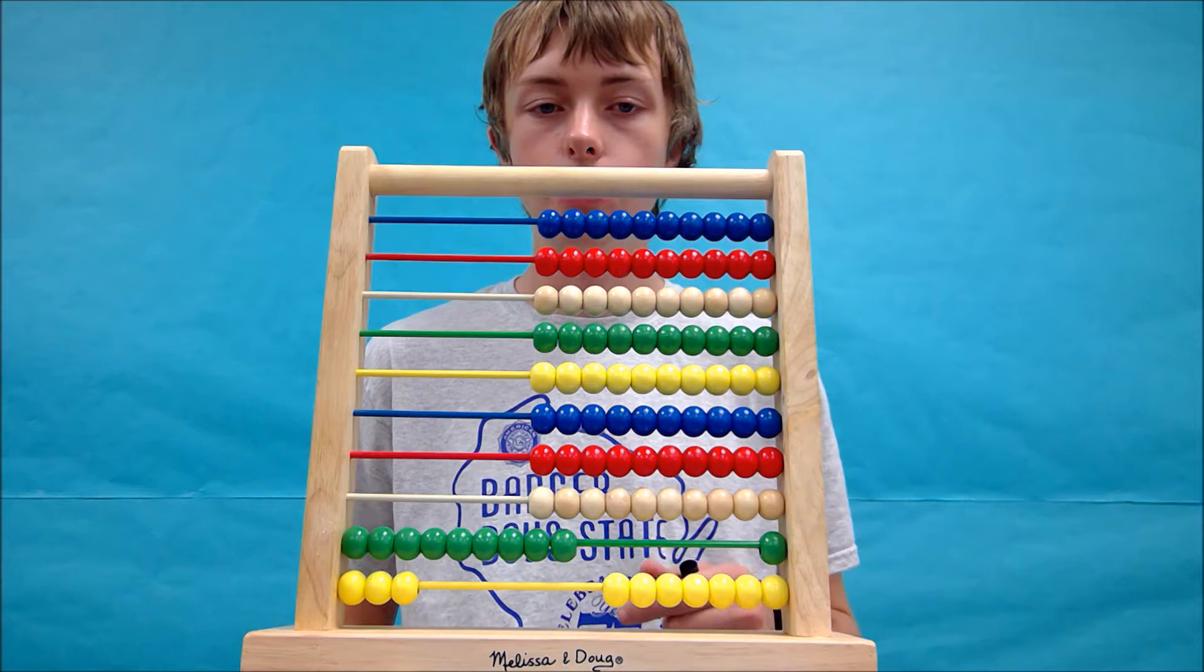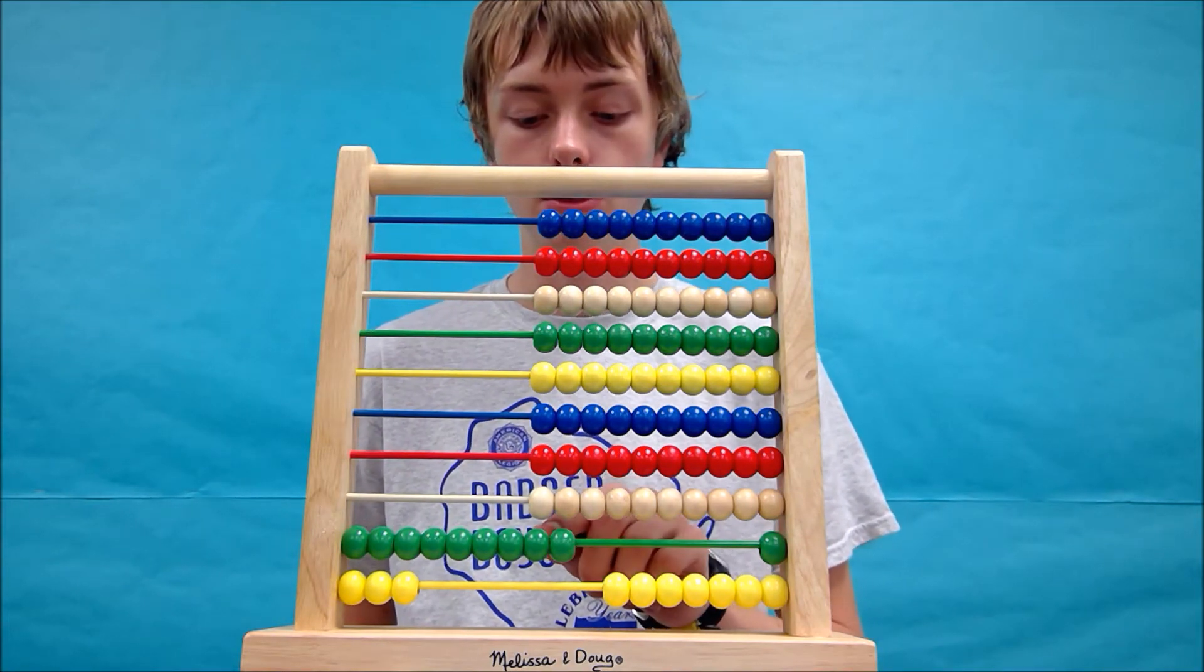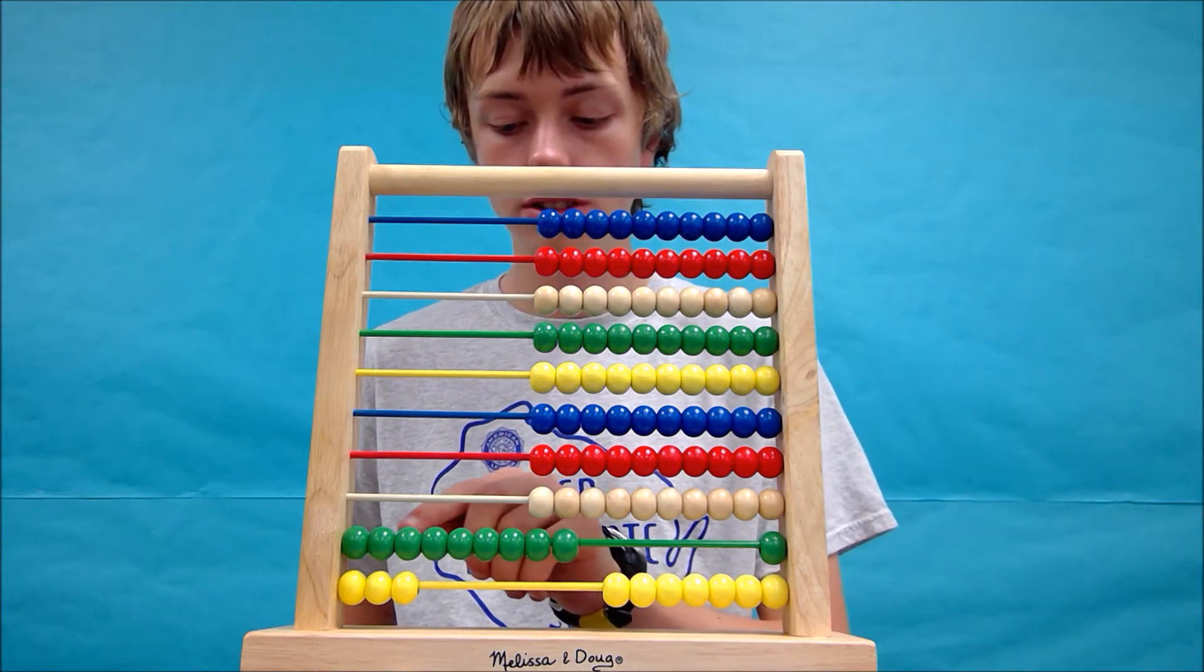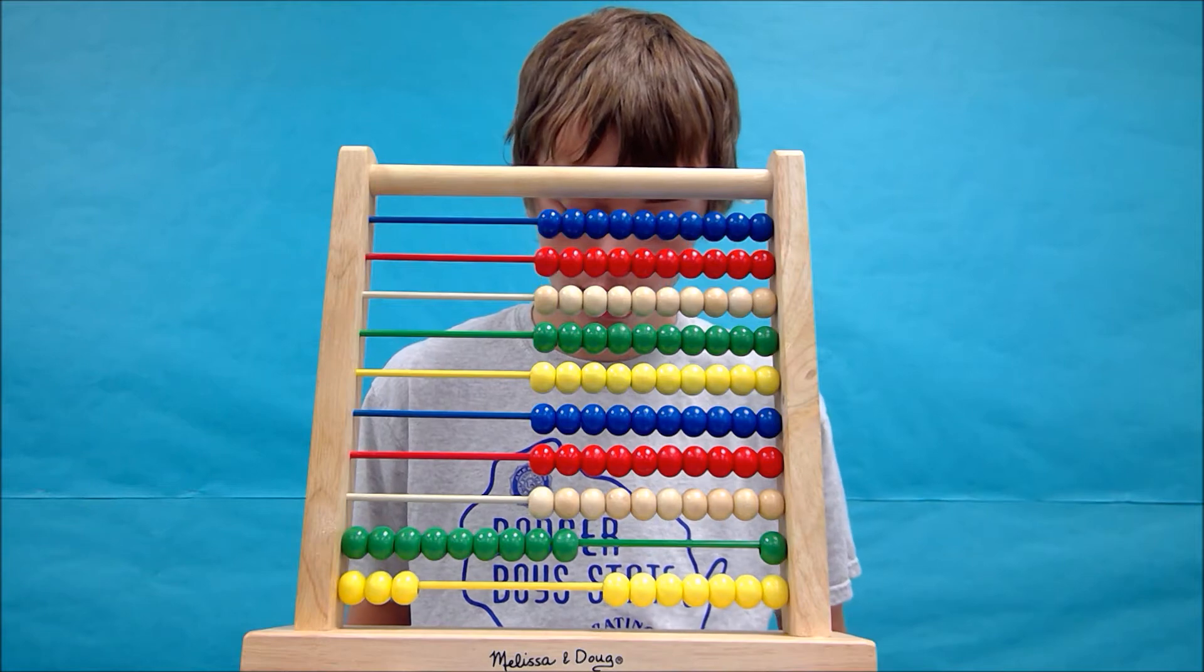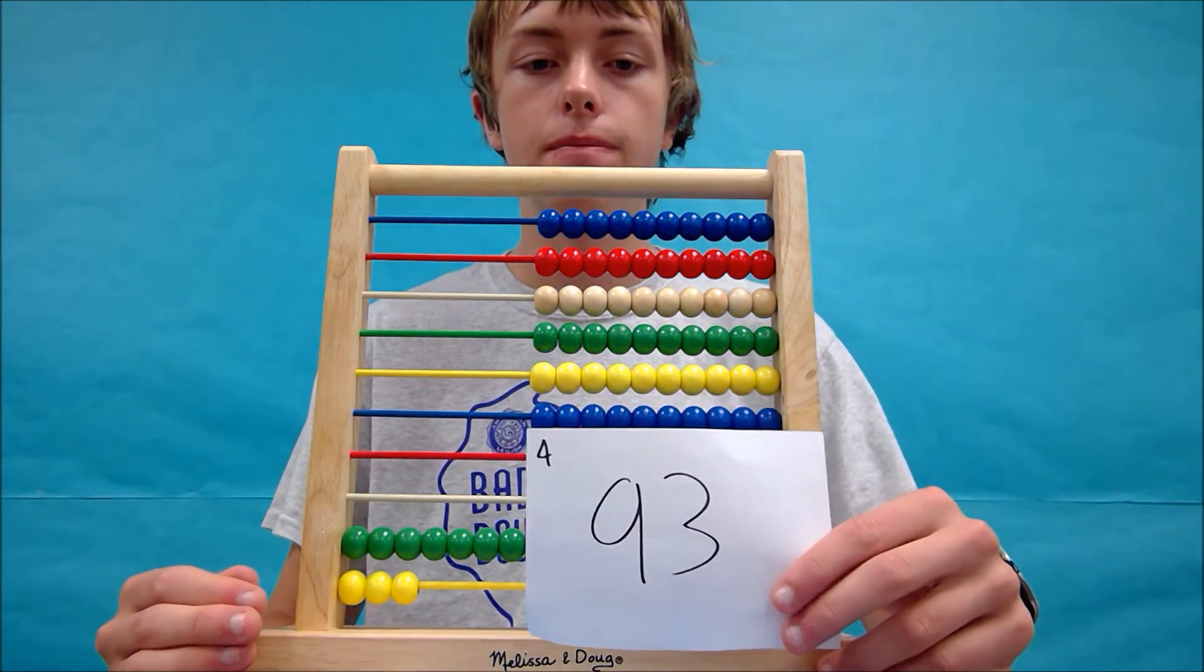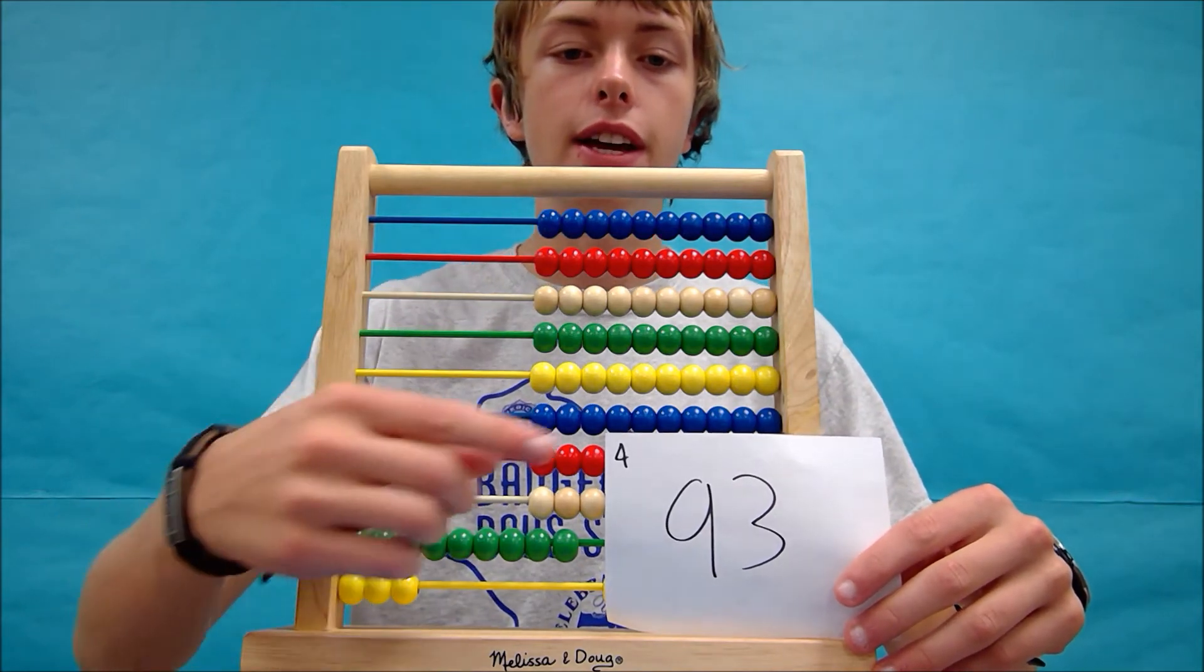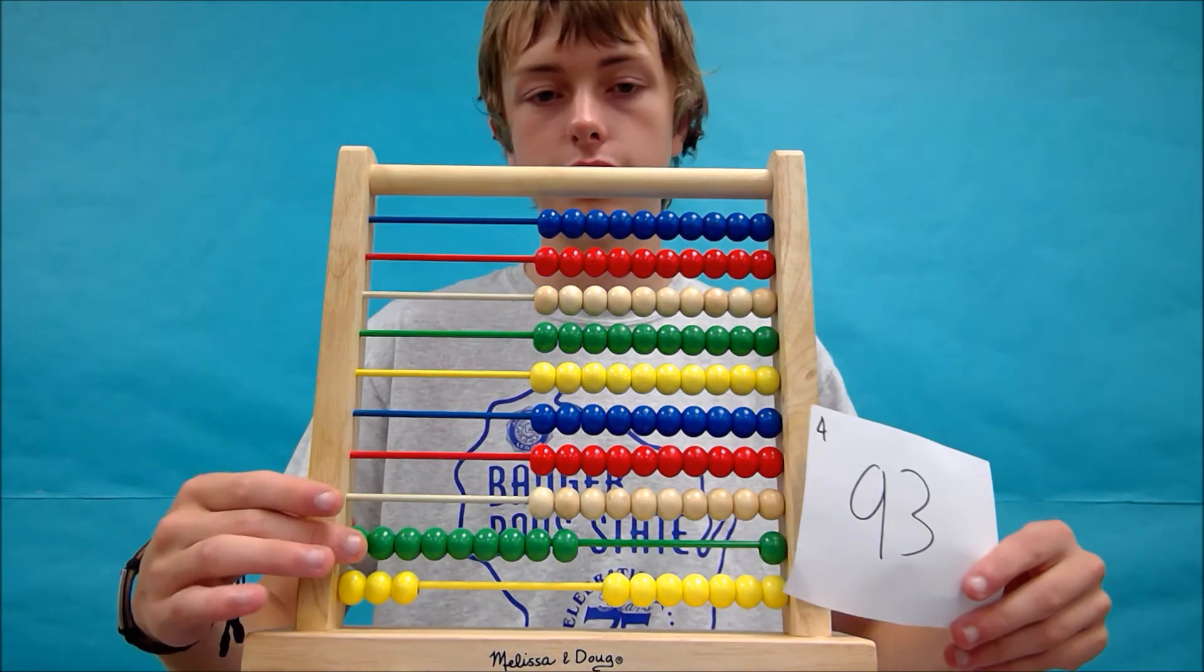And so now this gives us the answer to 56 plus 37. I'm going to write it down. If you don't have to, you don't have to, but it is very helpful to write it down. So I would two, four, six, eight, nine, and three. So our answer we have found is 93. This is what your abacus should look like. And this up here in this corner was my notes when we moved up to the tens row.